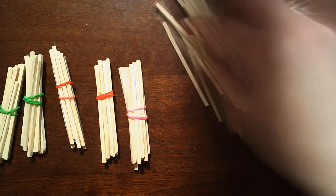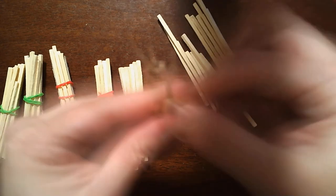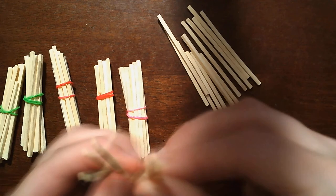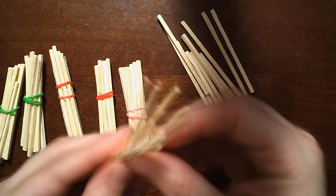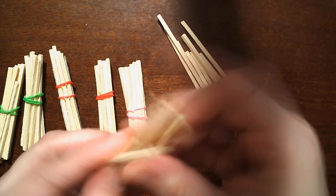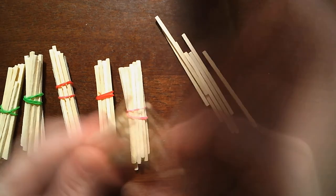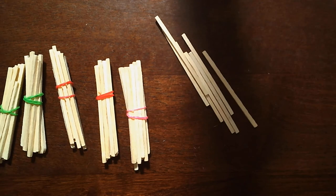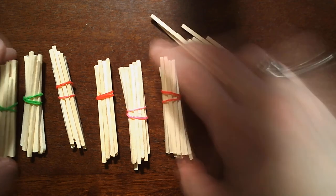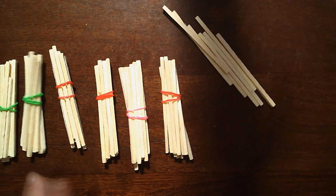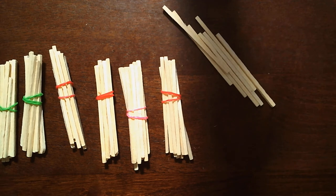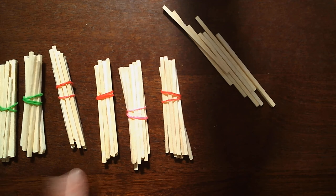I still have some sticks by themselves. I count one, two, three, four, five, six, seven, eight, nine, ten. Let's bundle it up. Bundled it up. How many bundles do I have? One, two, three, four, five, six. How many tens do I have? Six tens: 10, 20, 30, 40, 50, 60.